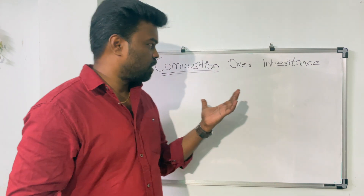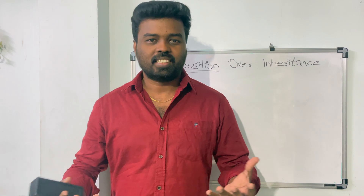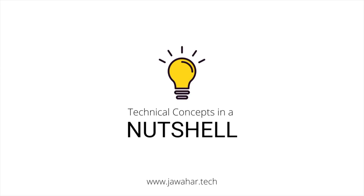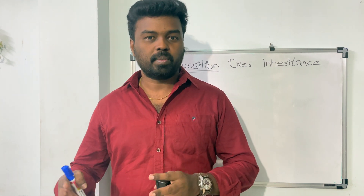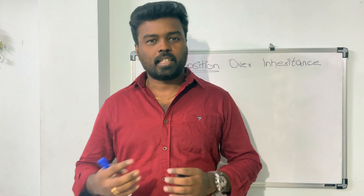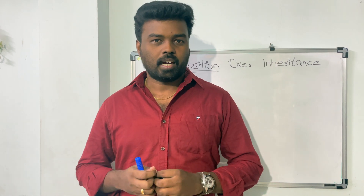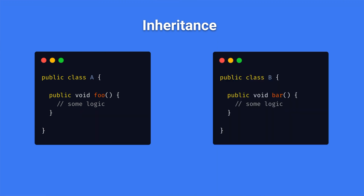We are going to talk about what is composition and why exactly we have to prefer composition over inheritance. To start, let's see how we can implement inheritance and composition from the code perspective. Let's assume we have a class called A and this particular class contains a functionality called foo. Now we create another class called B and that class contains another function called bar.